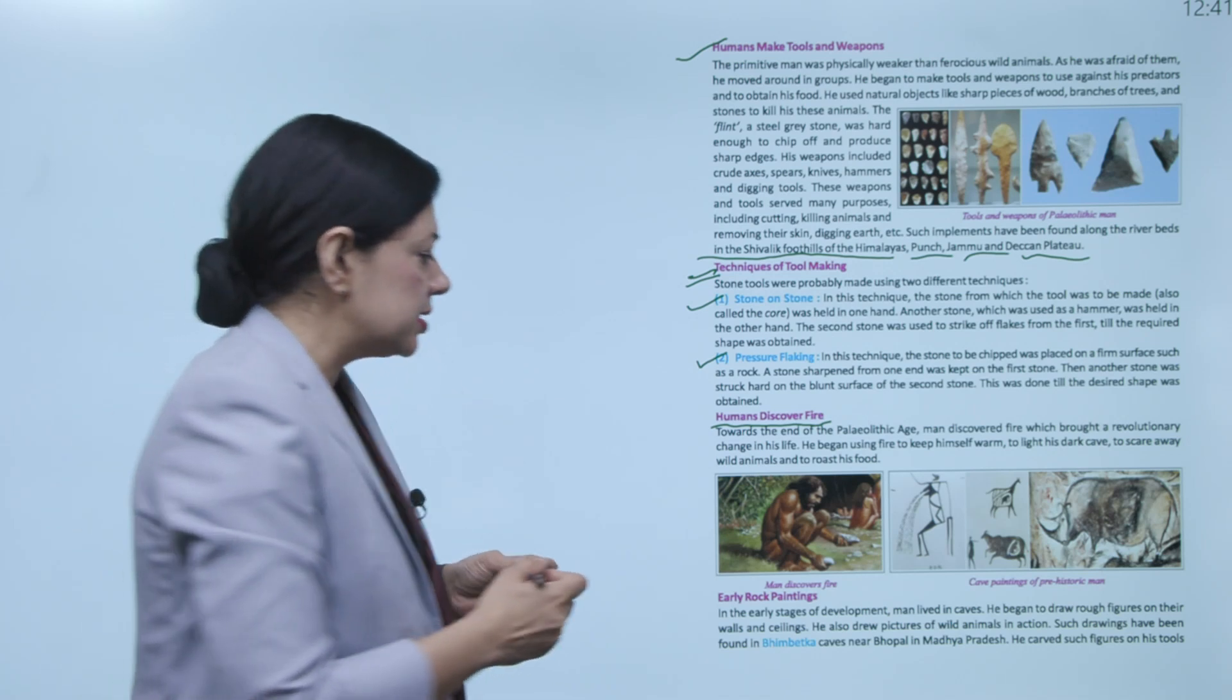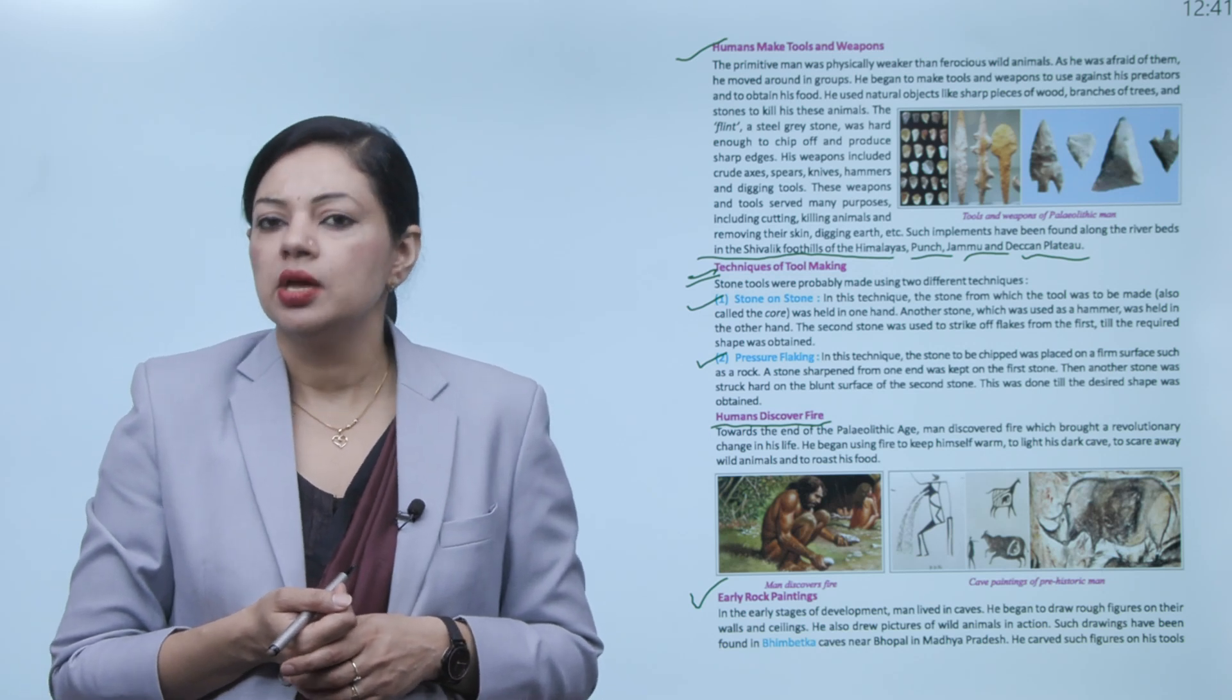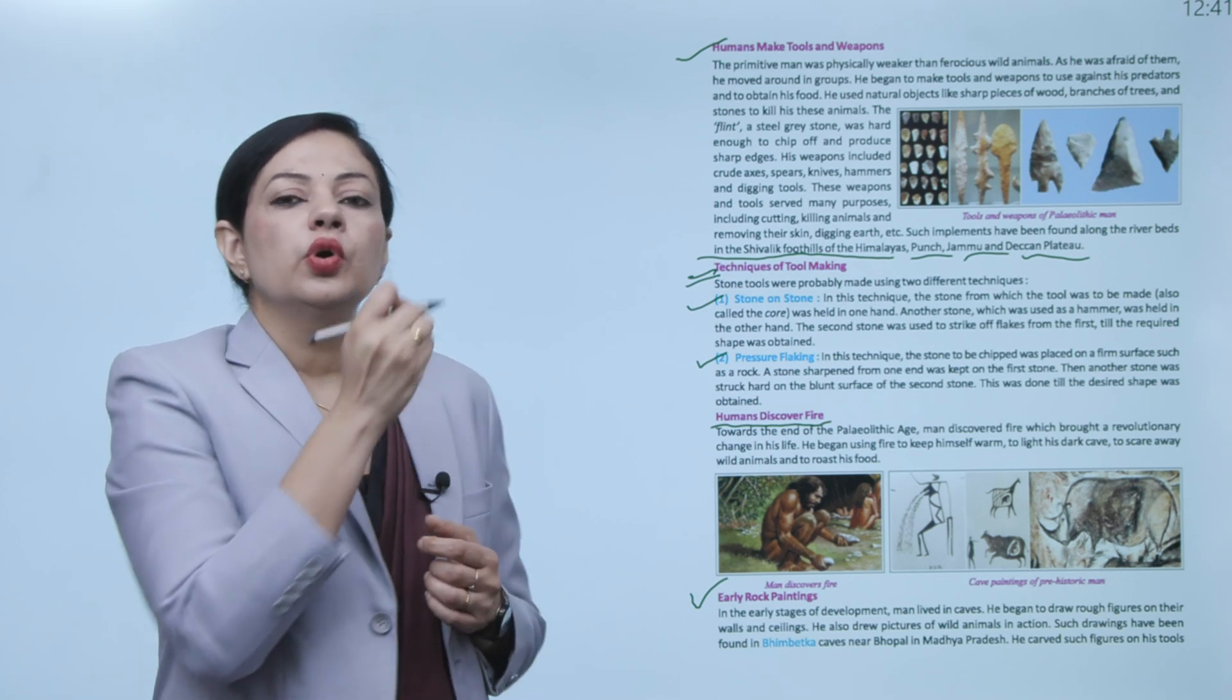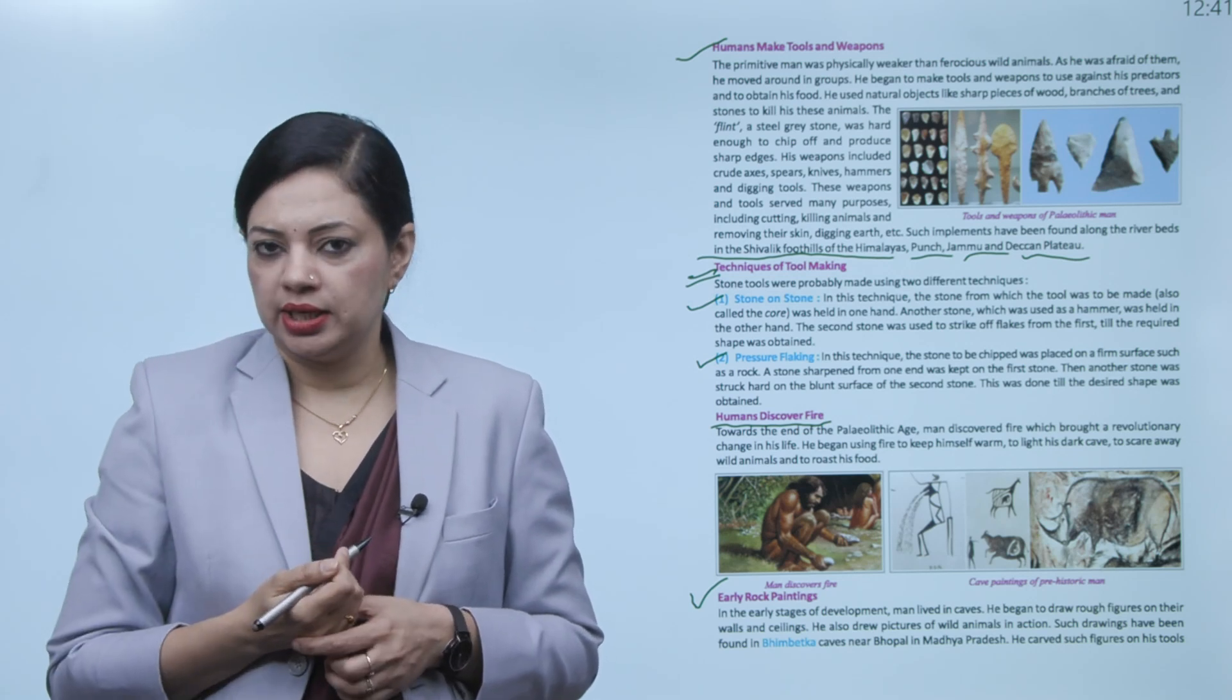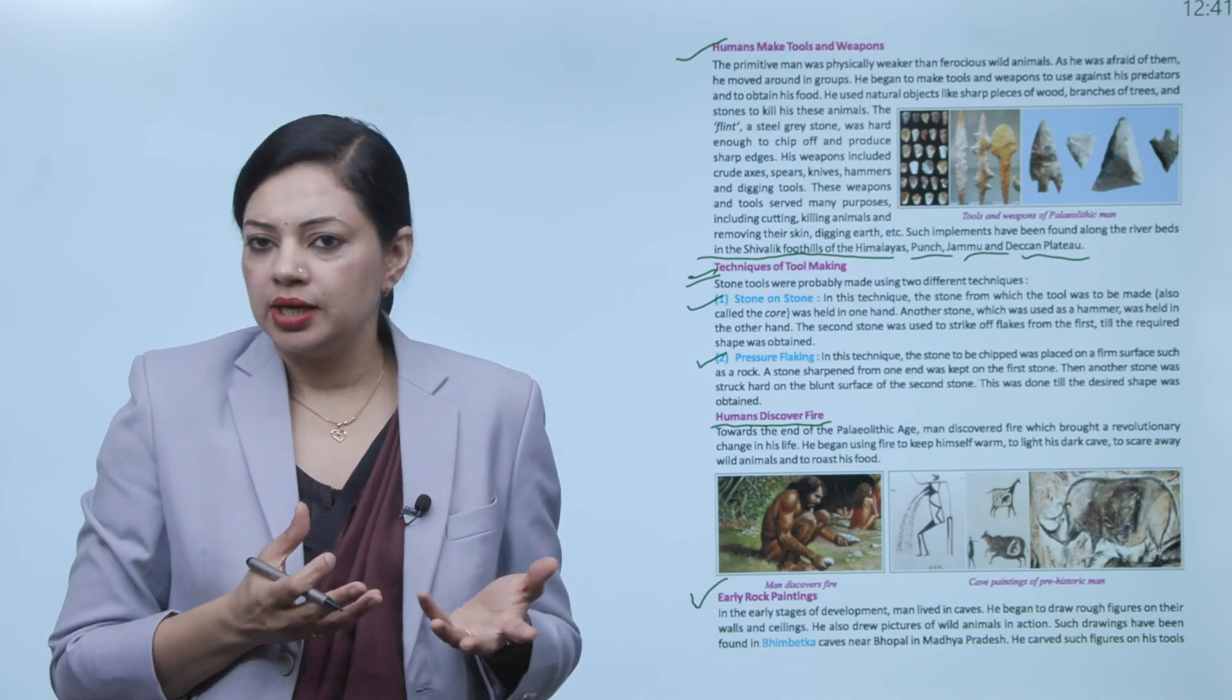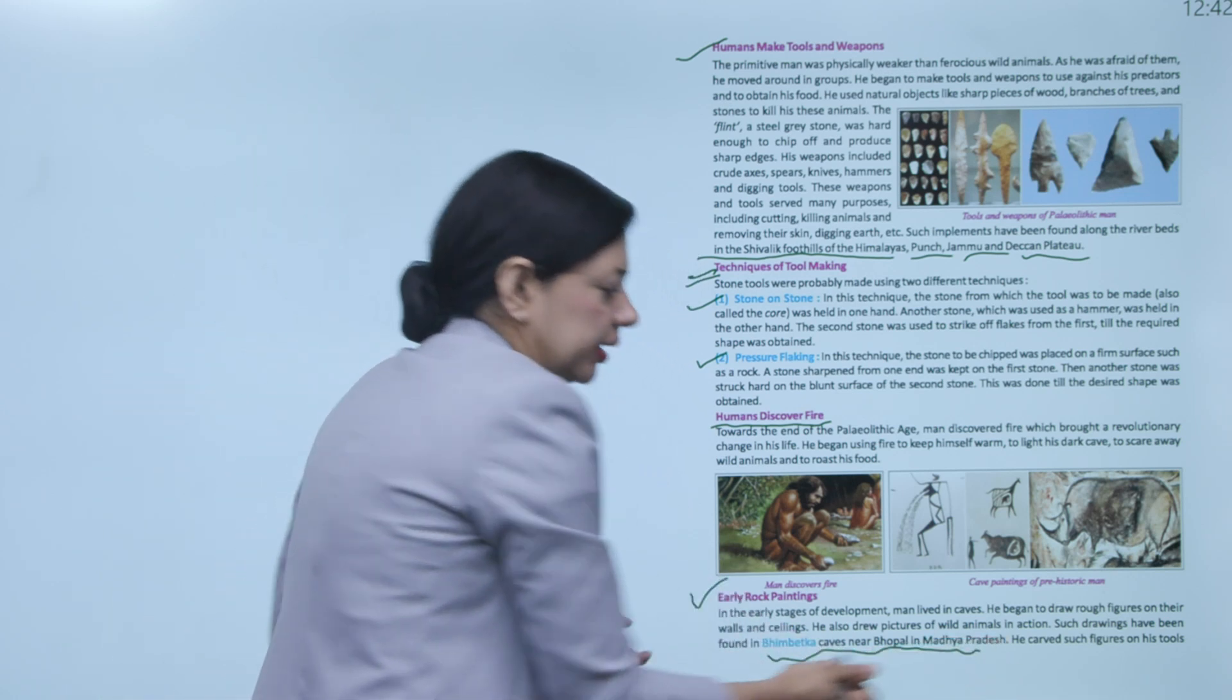Next is early rock paintings. In the early stage of development man lived in caves. He began to draw rough figures on their walls and ceilings. What they did was live in caves, and when they had free time, they would draw something on the walls and ceilings of caves. Mostly what they drew was what they did in their daily life, like a man hunting an animal, these types of scenes. You can see such scenes in Bhimbetka caves near Bhopal in Madhya Pradesh.